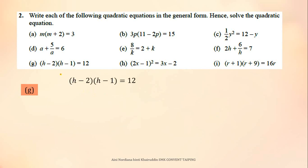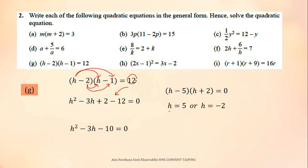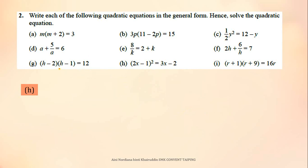For G, expand the two brackets. Don't forget to bring 12 to the left side so it becomes minus 12. Then rearrange into general form and factorize. The values of H are 5 and negative 2.